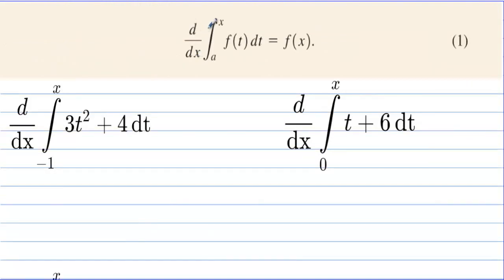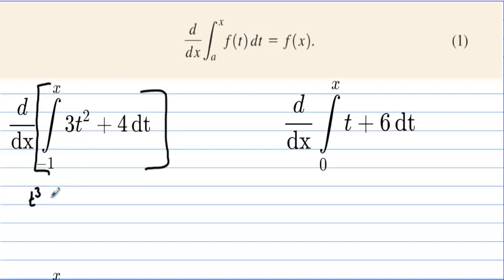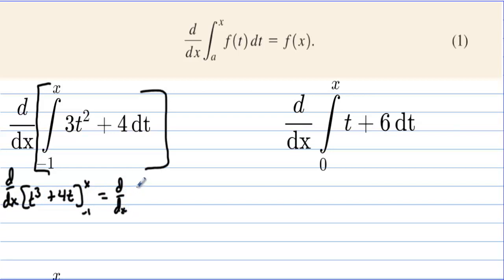So we're saying the derivative of the integral is f of x. Let's take a look at something like this the long way — what if we actually took the integral and then took the derivative? The integral of 3t squared is t to the third, and then we'd have plus 4t, and we'd integrate from negative 1 to x. We're going to take the derivative of this when we're done. This is equal to the derivative of x to the third plus 4x — that's how the t's are going to change to x's.